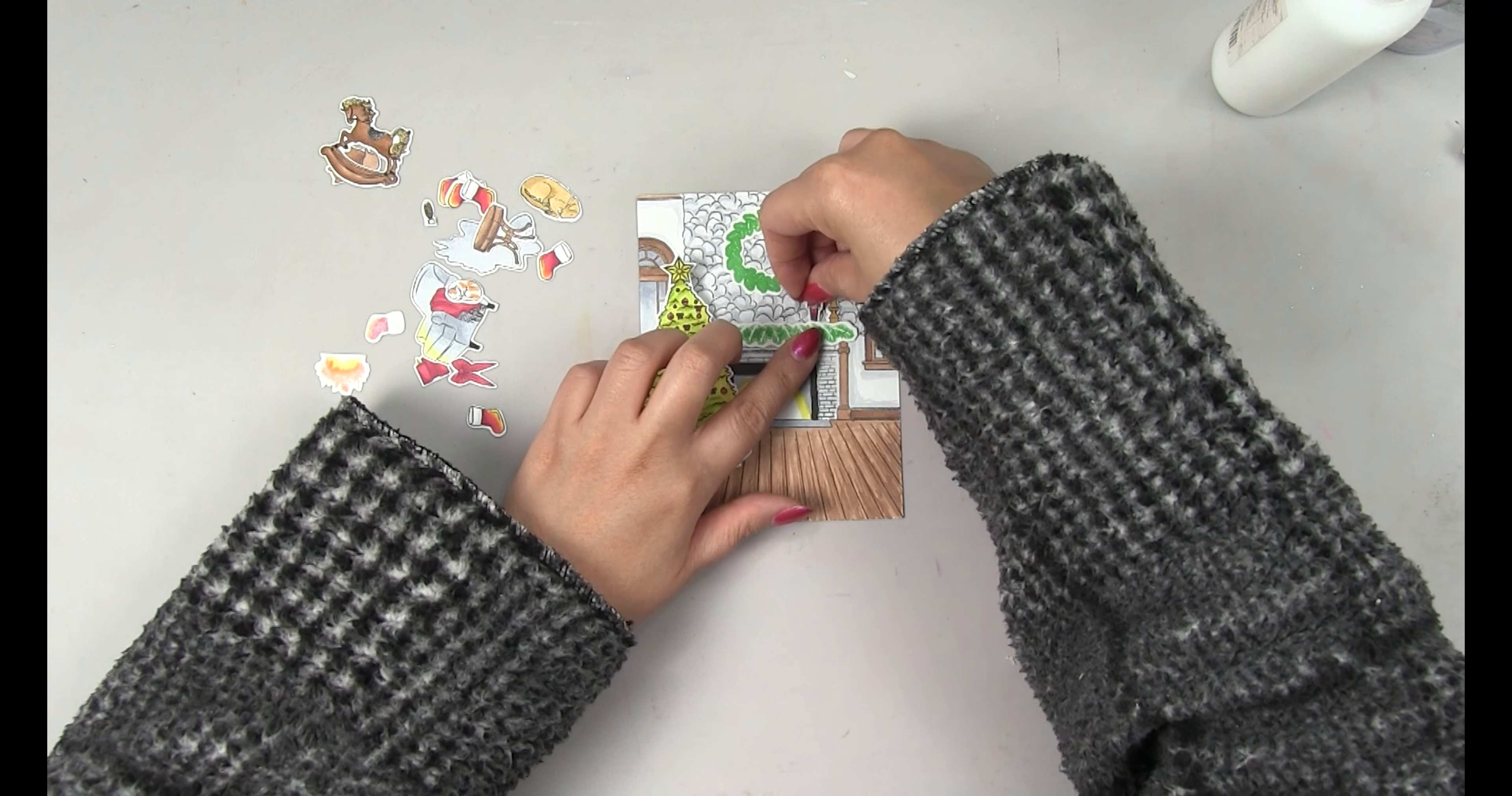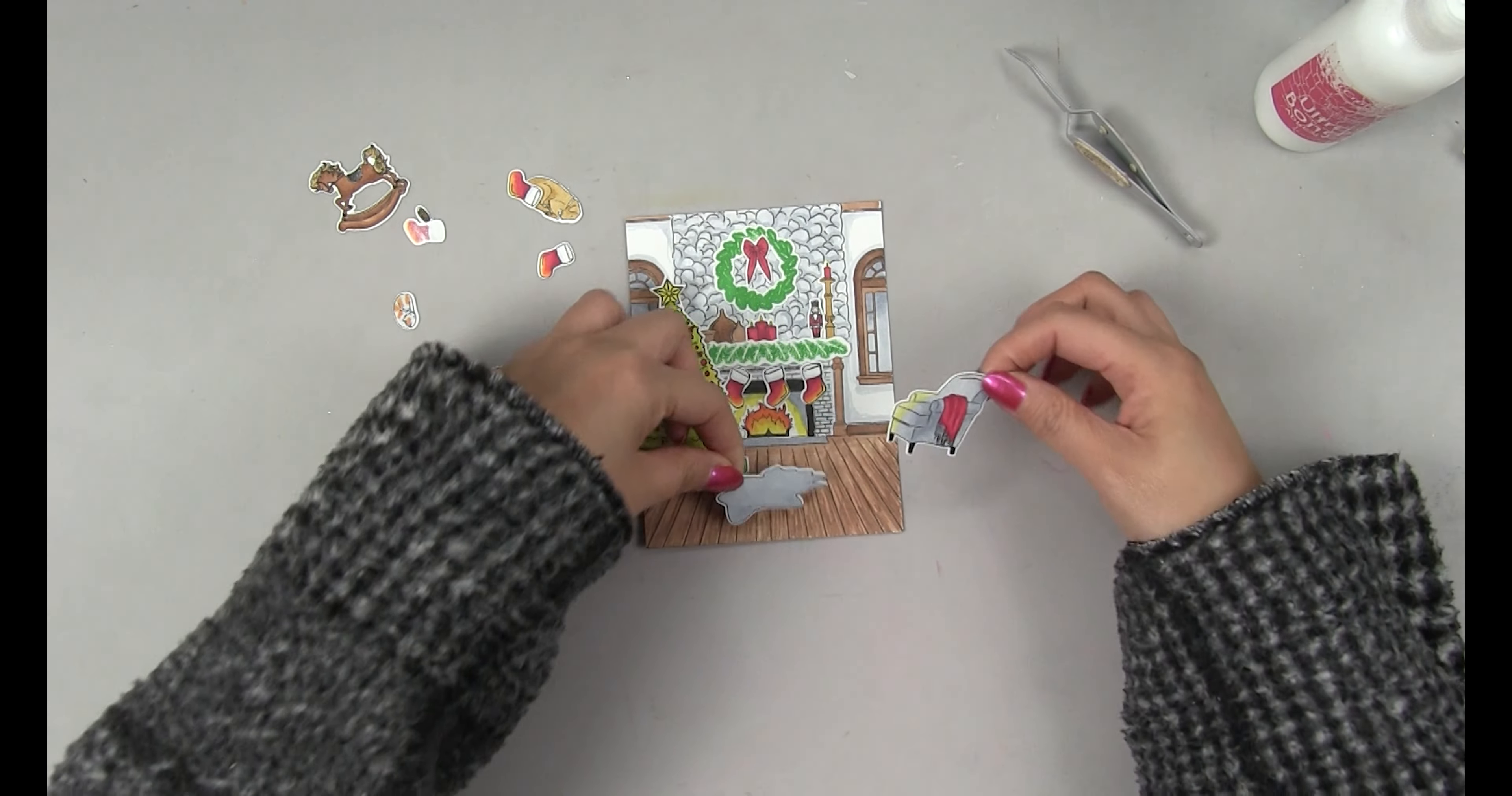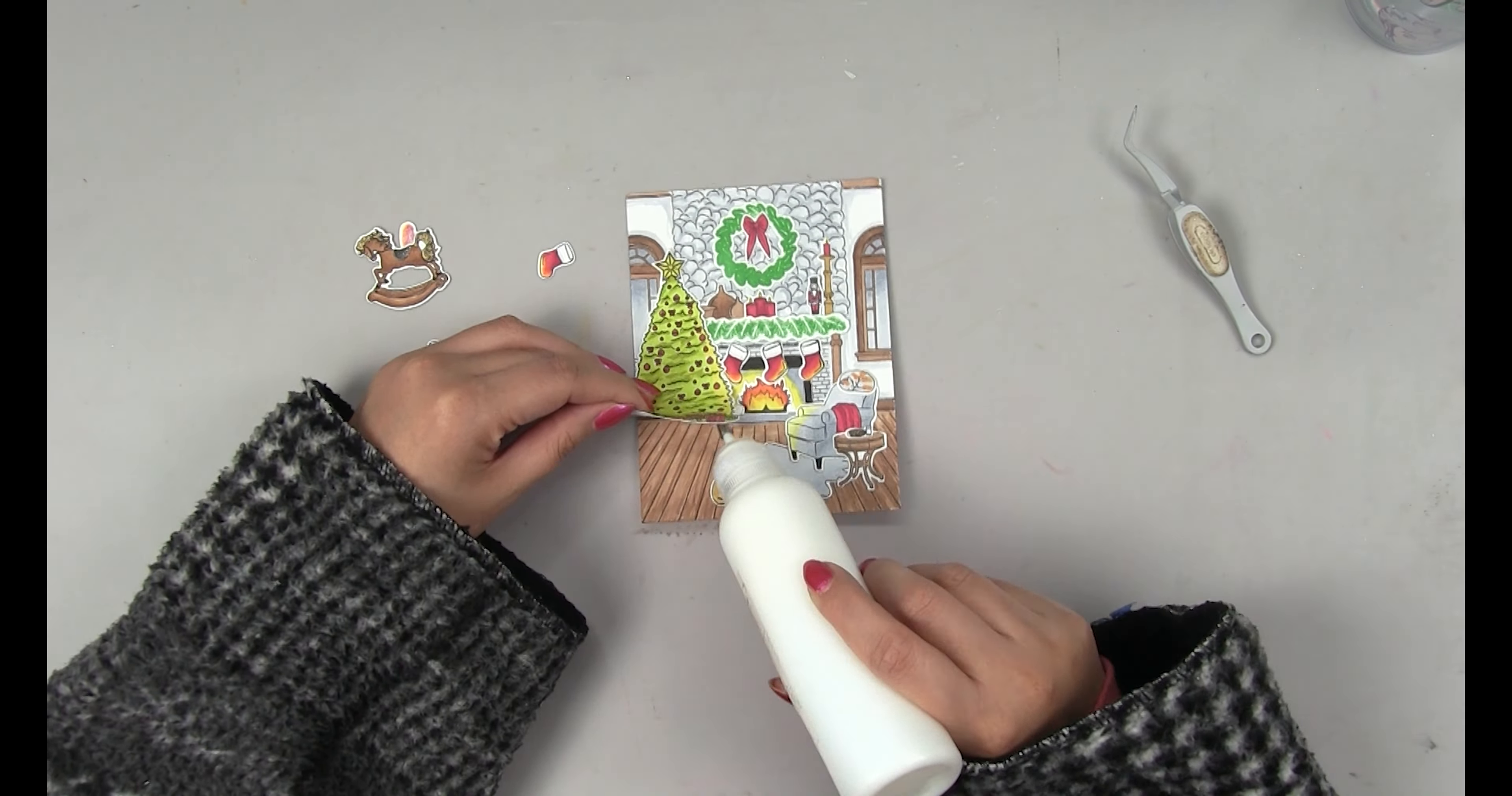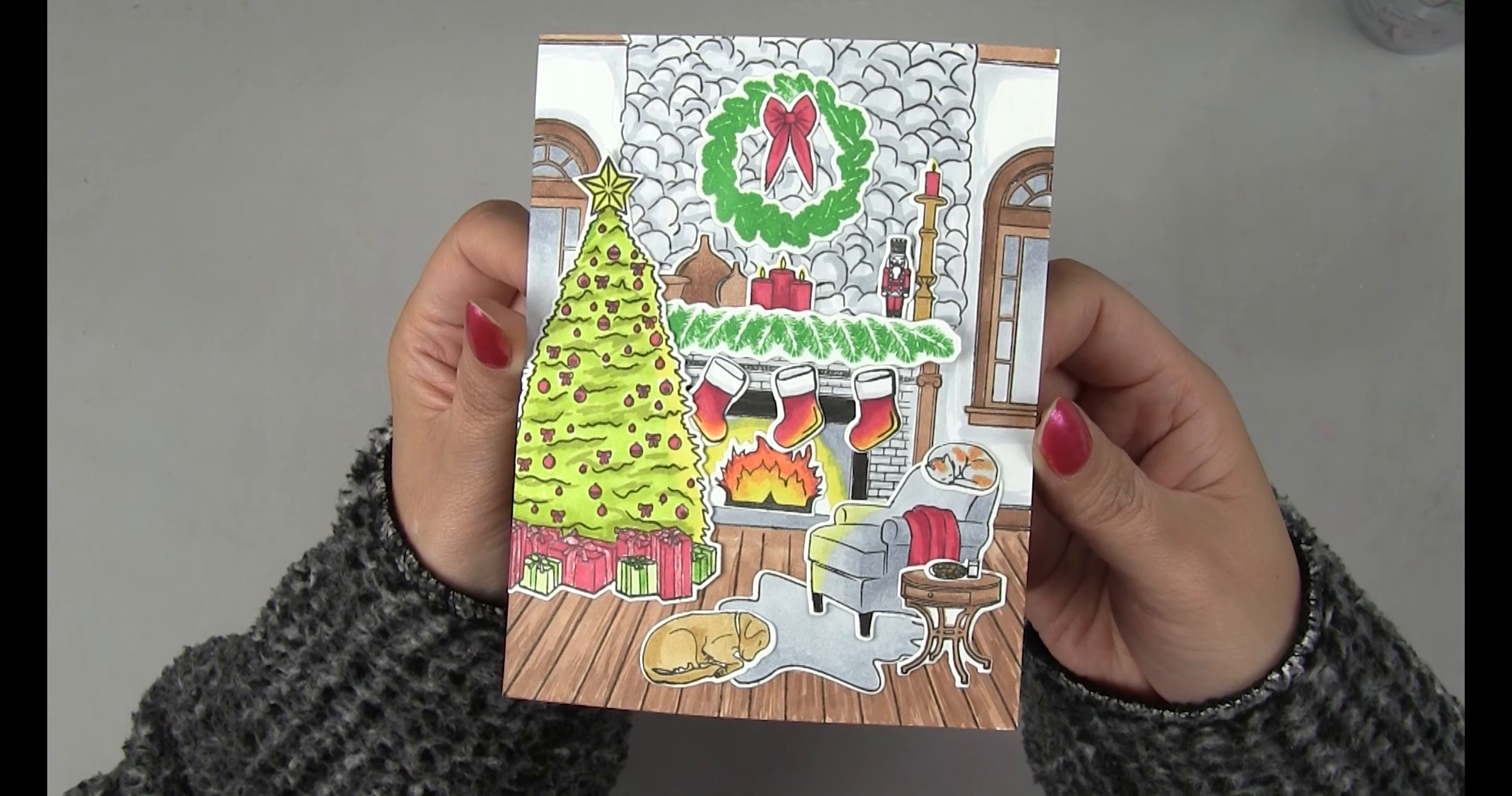And now I'm going to start gluing everything down. For the tree I just added a dot of glue and stuck that down because I knew that I'd have to get some things glued down behind the tree but I did want to get the tree down first and then I just started gluing everything else down. It was really fun to put this card together. It's almost like a 2D dollhouse very festive very fun. The tree was hanging off so I just cut off the excess piece.